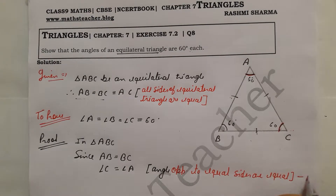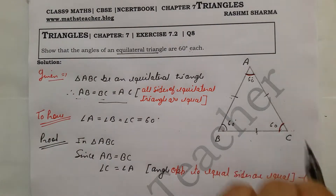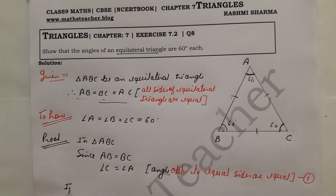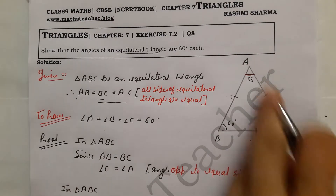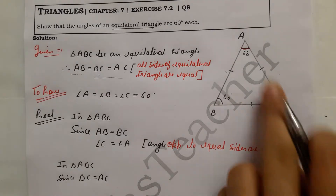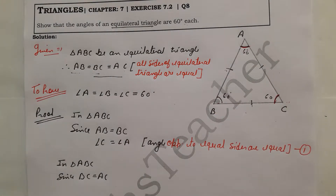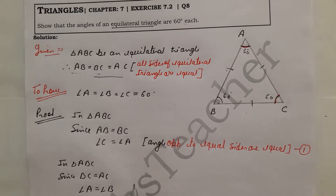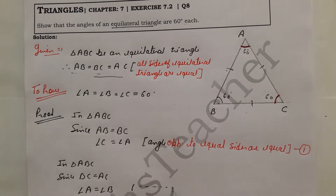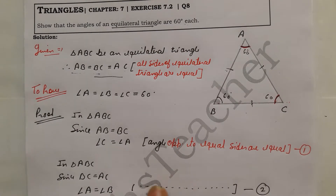Now for the second step, in triangle ABC, since BC equals AC, the angle opposite to BC is angle A, and the angle opposite to AC is angle B. Therefore, angle A equals angle B. The reason is the same: angles opposite to equal sides are equal. This is equation number two.